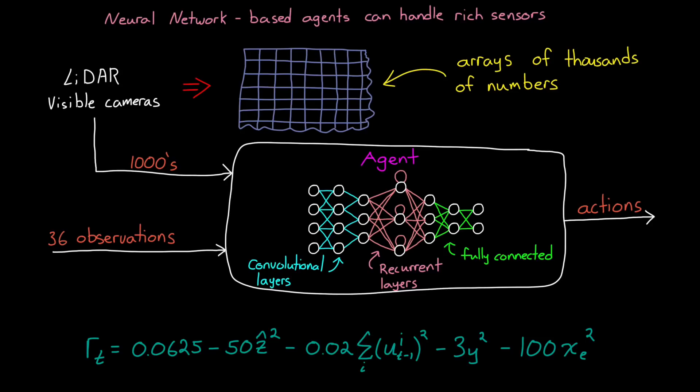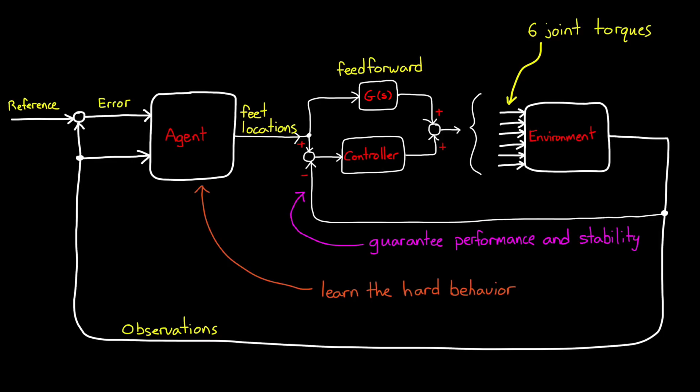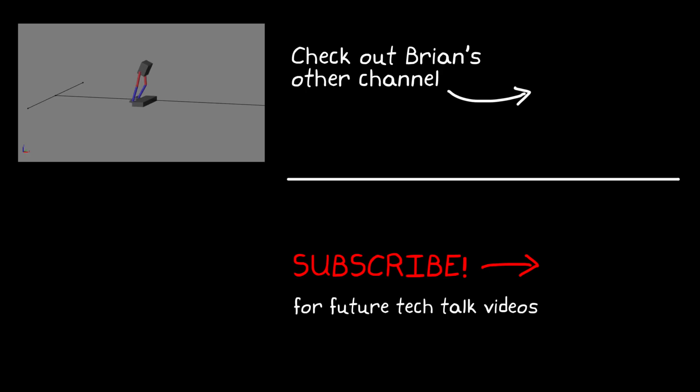Now I've addressed a few of the problems with reinforcement learning in this video, and I showed how we can modify the problem by combining the benefits of traditional control design with reinforcement learning. Now we're going to expand on this some more in the next video, where we'll talk about other downsides of reinforcement learning, and what we can do to mitigate them. So if you don't want to miss that and future Tech Talk videos, don't forget to subscribe to this channel. Also, if you want to check out my channel, Control System Lectures, I cover more control topics there as well. Thanks for watching, and I'll see you next time.